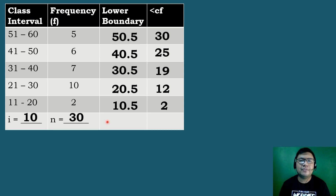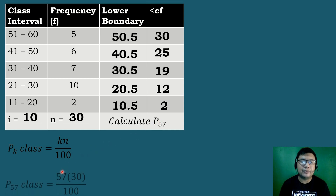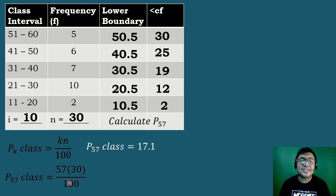Now, after we have completed the cumulative frequency distribution table, let's try to compute the value of Percentile 57. The next step is to get the percentile class using the formula k times n all over 100. We substitute k equal to 57 and n equal to 30, then divide by 100. So 57 times 30 divided by 100 is equal to 17.1.